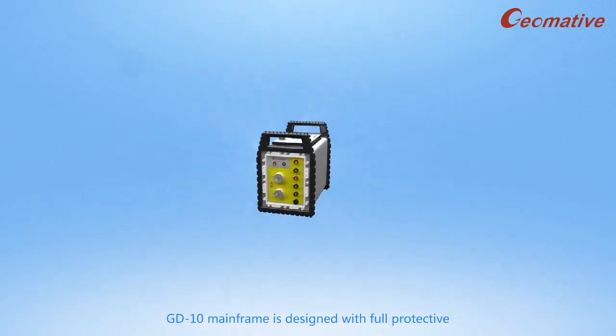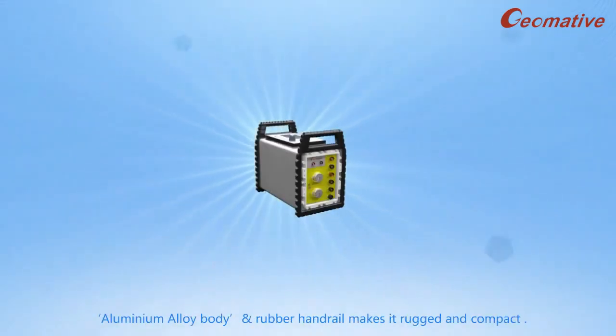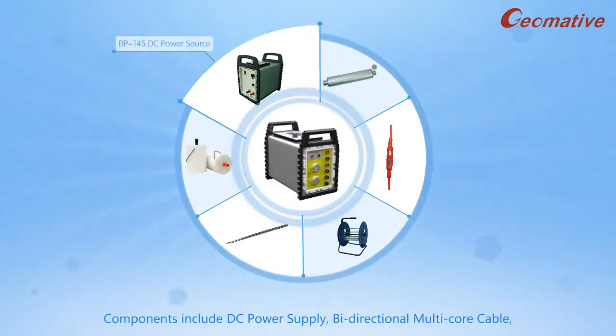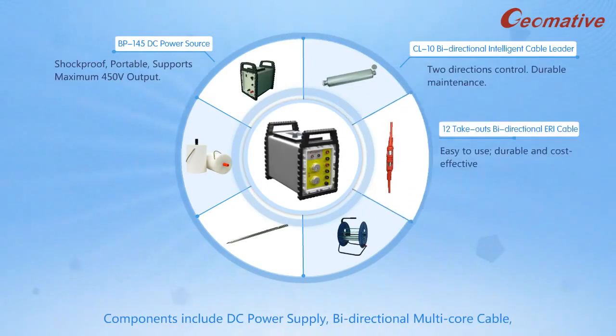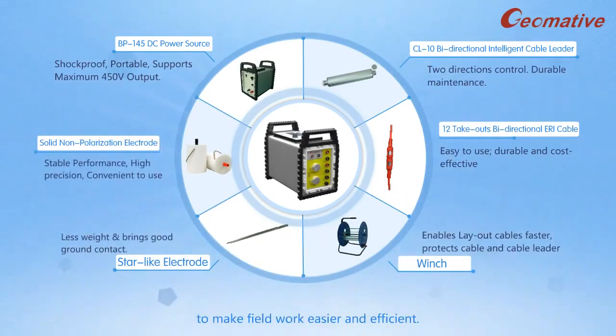GD-10 mainframe is designed with full protective aluminum alloy body and rubber handrail making it rugged and compact. Components include DC power supply, bi-directional multi-core cable, cable leader, winch, and star-like electrode to make field work easier and efficient.